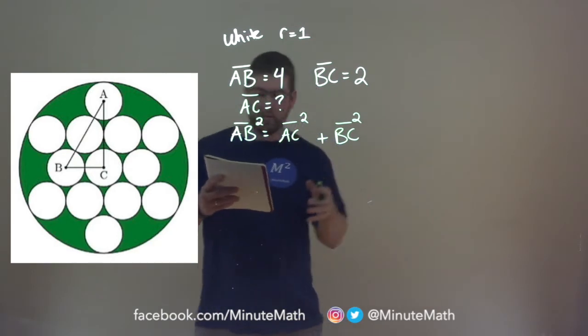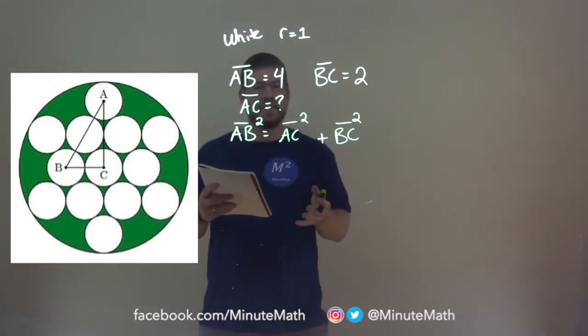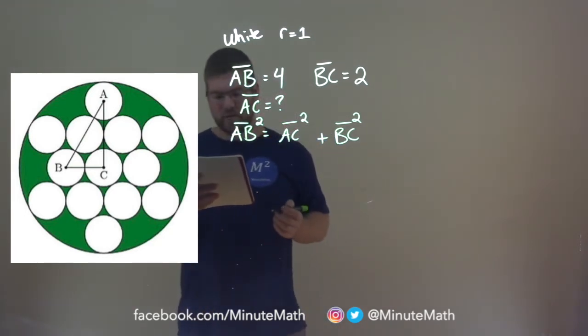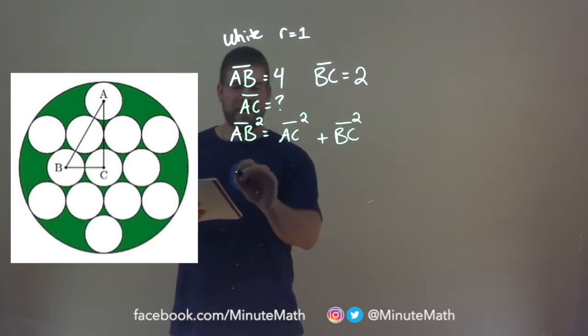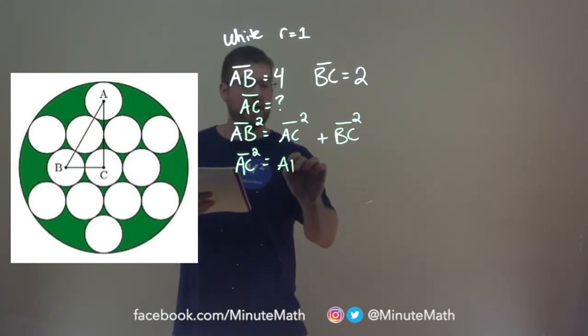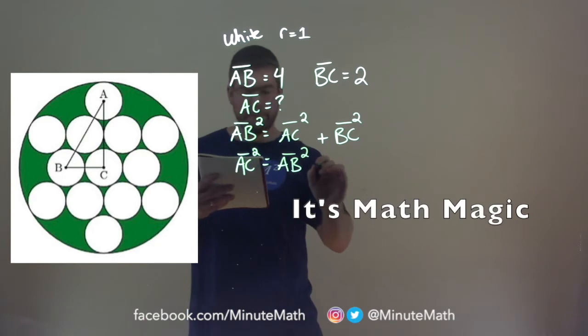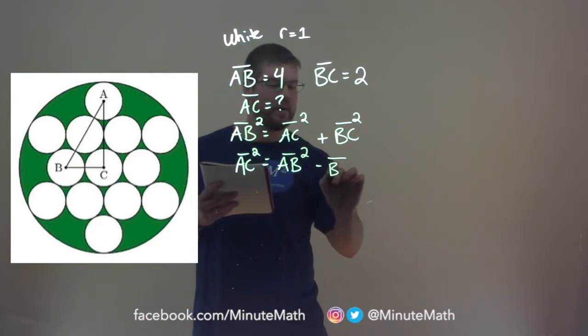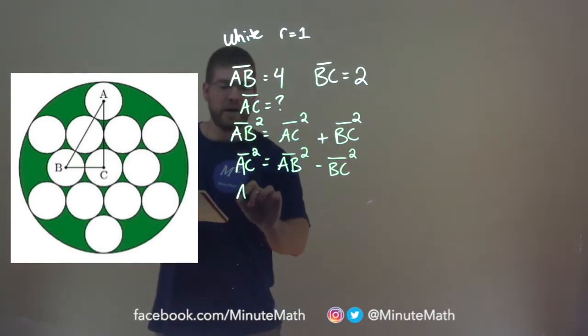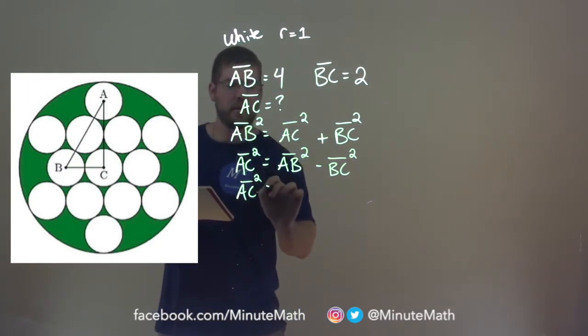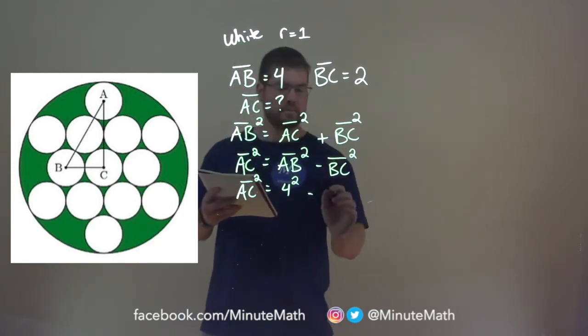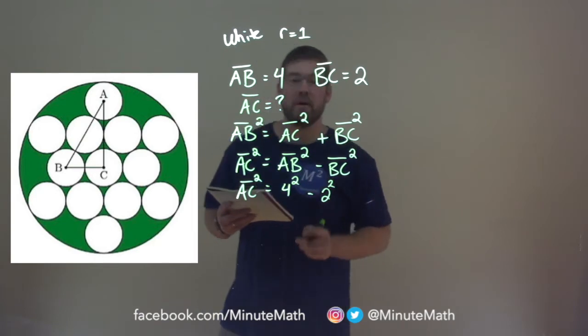Now we can rearrange this. We want to rearrange it to get AC squared by itself. So to do that we subtract BC squared from both sides. So the length of AC squared ends up being equal to the length of AB squared minus the length of BC squared. Well we know what the length of AB and BC are. AC squared equals AB being four squared minus BC being two squared.